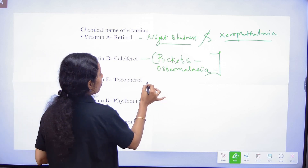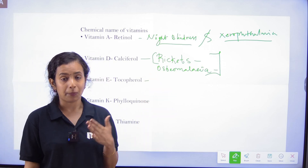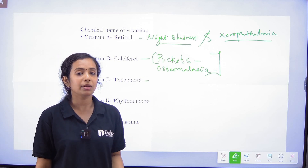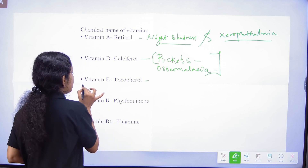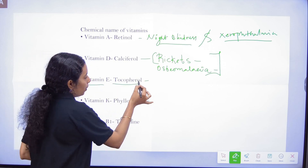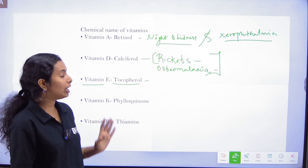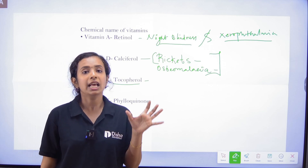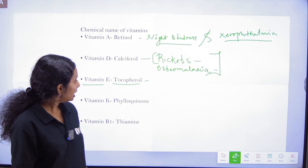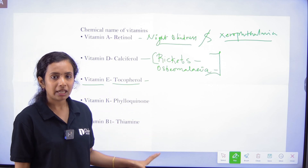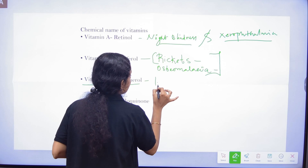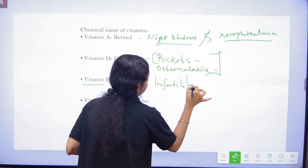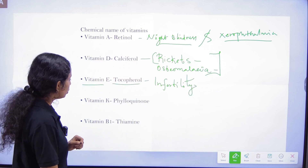Vitamin E's chemical name is Tocopherol. Vitamin E is known as the beauty vitamin. Vitamin E deficiency causes reproductive problems — specifically Infertility.